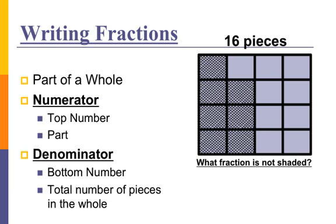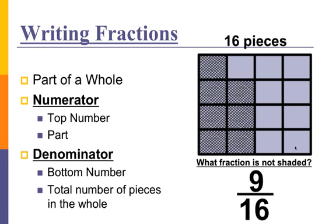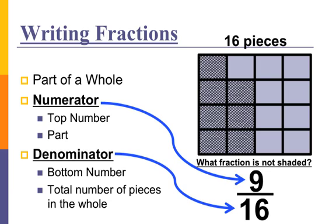How about what fraction is not shaded? I've got one, two, three, four, five, six, seven, eight, nine — nine boxes that are not shaded. So what fraction would that be? Nine sixteenths. Nine is my numerator because it tells me the part I'm talking about — the fraction that is not shaded. Since there are nine boxes that are not shaded, that's my numerator, and I have 16 boxes total in the whole, so my denominator is 16.